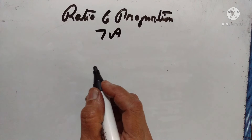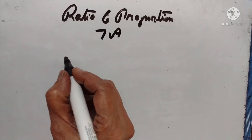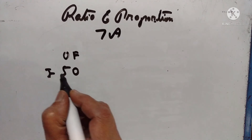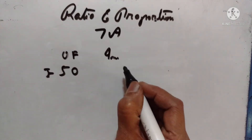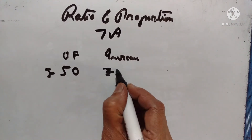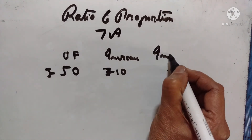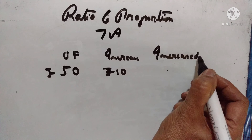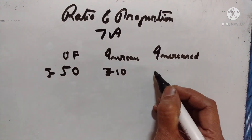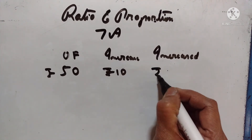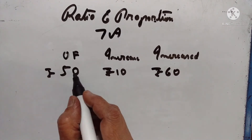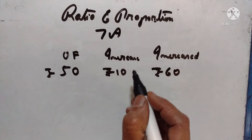Don't get confused with the terms increase and increased. Suppose the original fare is Rs. 50. The increase is Rs. 10. Then the increased fare, after adding the increase to the original fare, becomes Rs. 60. This is the original fare, and this is the increase in the fare. After adding this to the original fare, it becomes the increased fare.